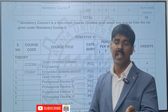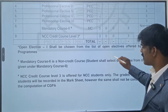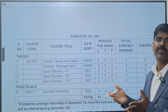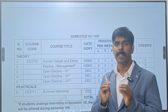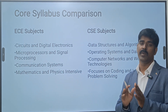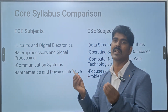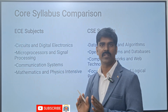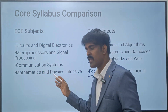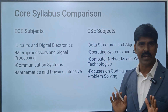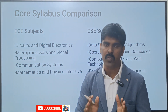In sixth semester you study object-oriented software engineering and other CSE core subjects. Most CSE students can enter into software roles. By seventh and eighth semester you are entering into projects with minimum subjects. So this is the syllabus comparison for CSE and ECE. The main core for ECE is circuits and digital electronics, microprocessors, and signal processing, with communication systems - all based on mathematics and physics.